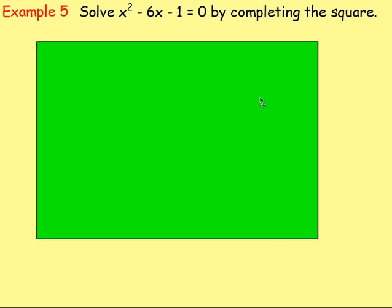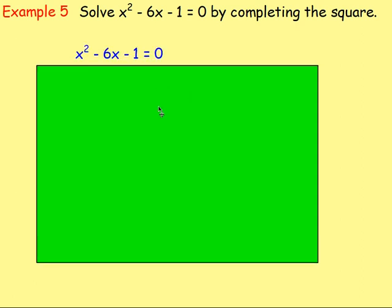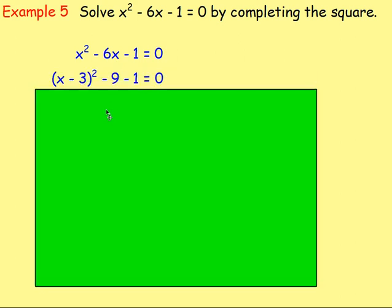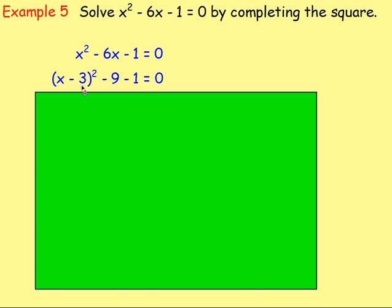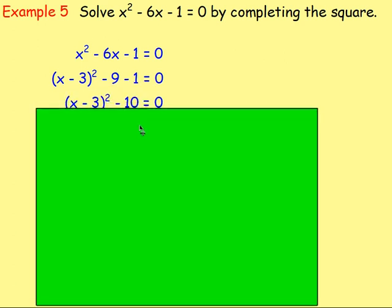I'll do one more example with that. Because as I said, this bit is new. So solve x squared minus 6x minus 1 equals 0 by completing the square. So again, just complete the square. So half the coefficient of x. So you get negative 3. So I've got x minus 3 in brackets squared. Square that, you get 9. So take that away. And then leave the negative 1. Negative 9 take away 1 is negative 10.